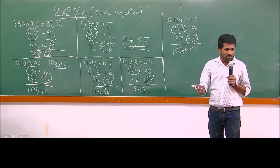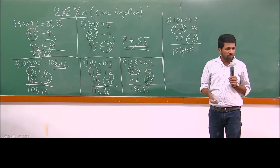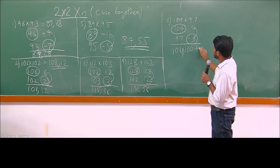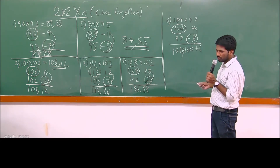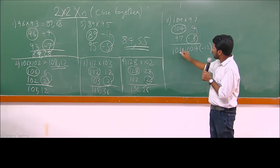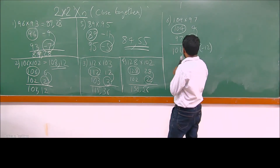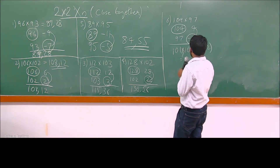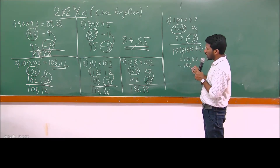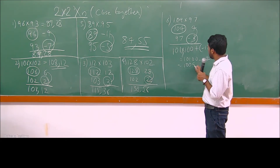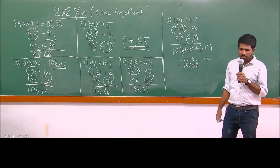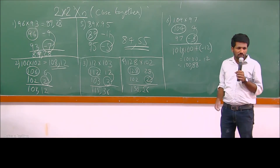When numbers are near 100 we use base 100; when near 1000, we use base 1000 — that is the only difference. So the expression is: result into 100 plus complement multiplication. Complement multiplication is 4 into minus 3, which is minus 12. So it becomes 10100 minus 12. What is 10100 minus 12? That is 10088 — the complement of 12 is 88. So the answer is 10088.